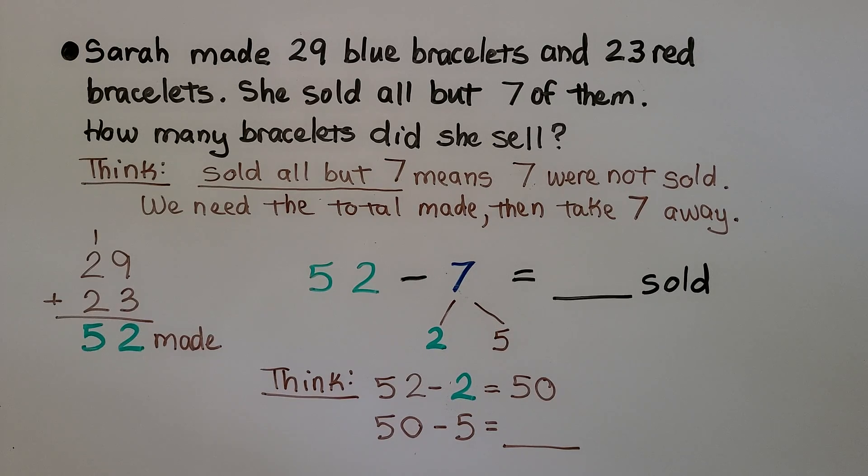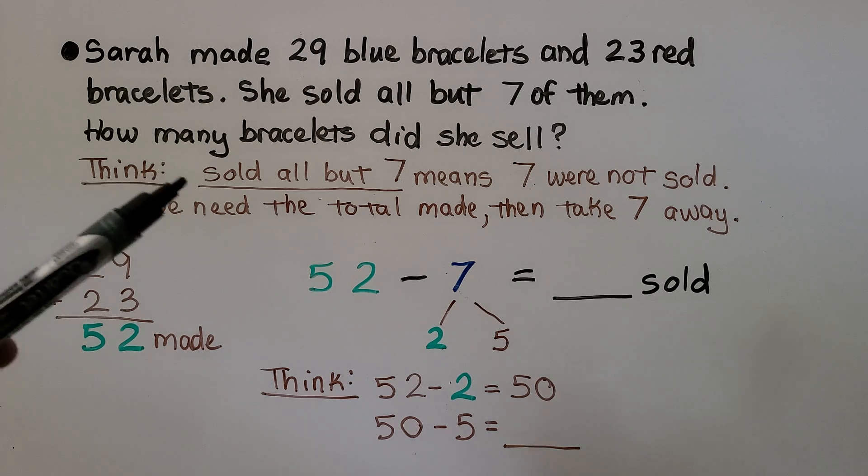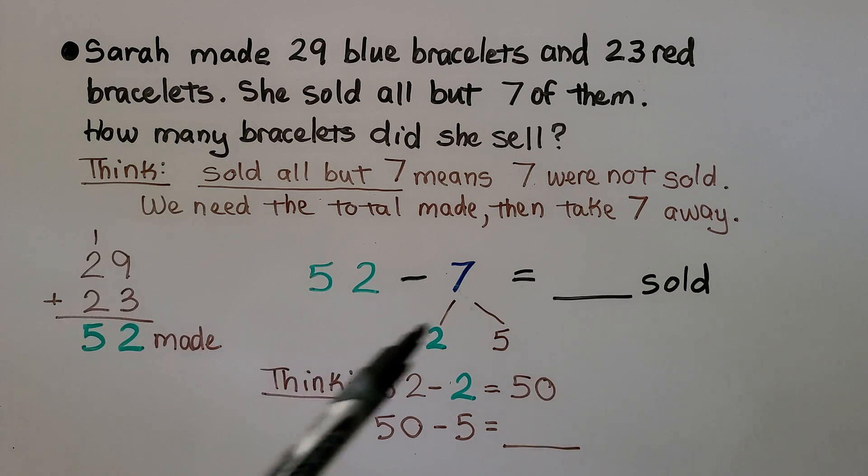Sarah made 29 blue bracelets and 23 red bracelets. She sold all but 7 of them. How many bracelets did she sell? Sold all but 7 means 7 were not sold. We need the total made, then take 7 away to know what was sold.